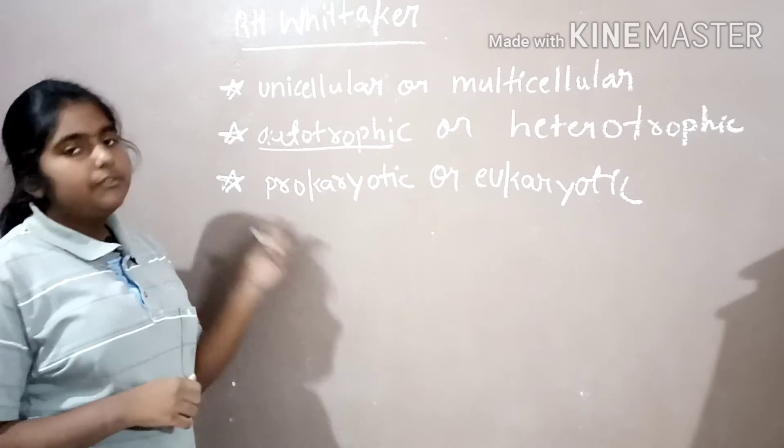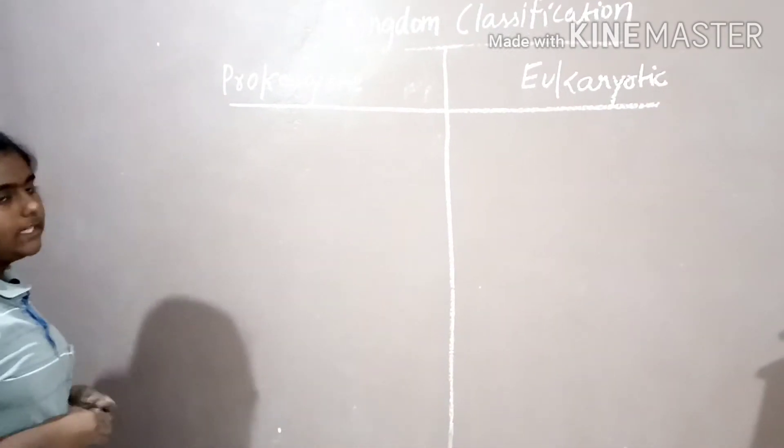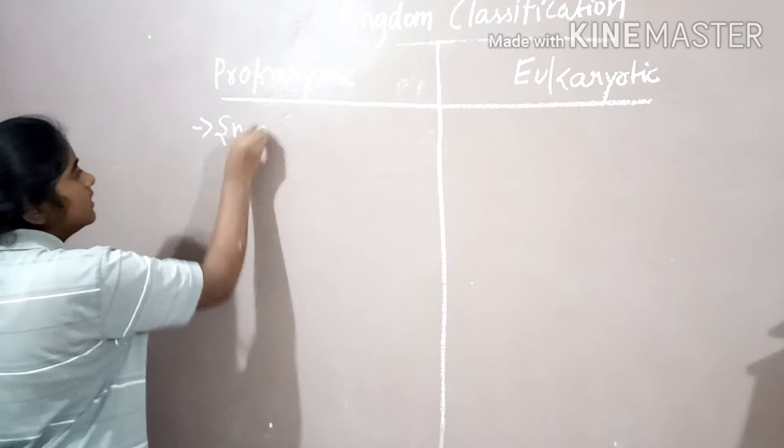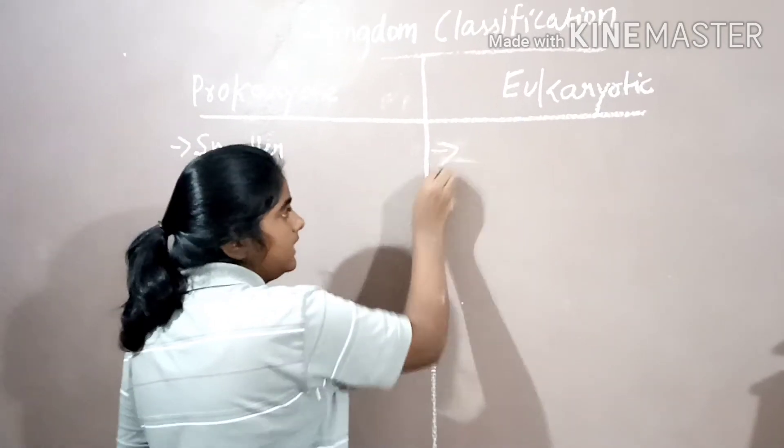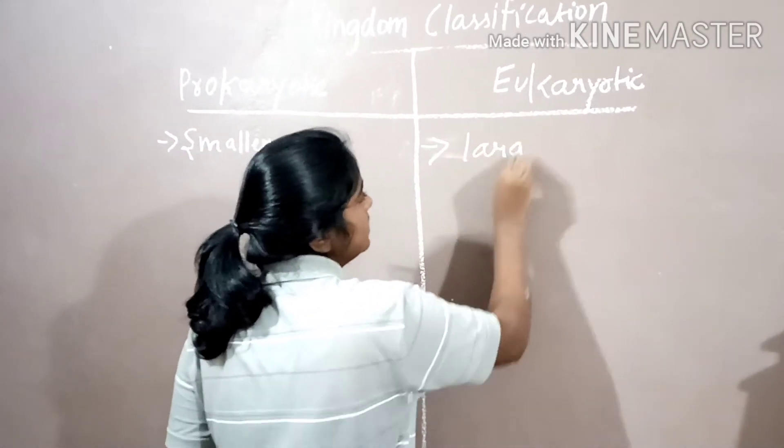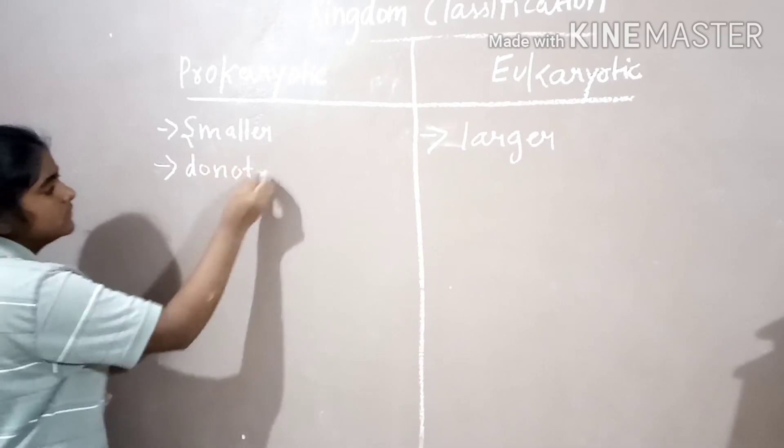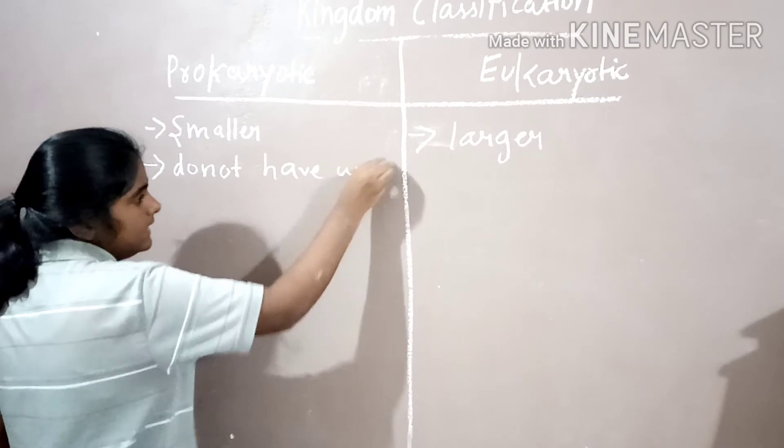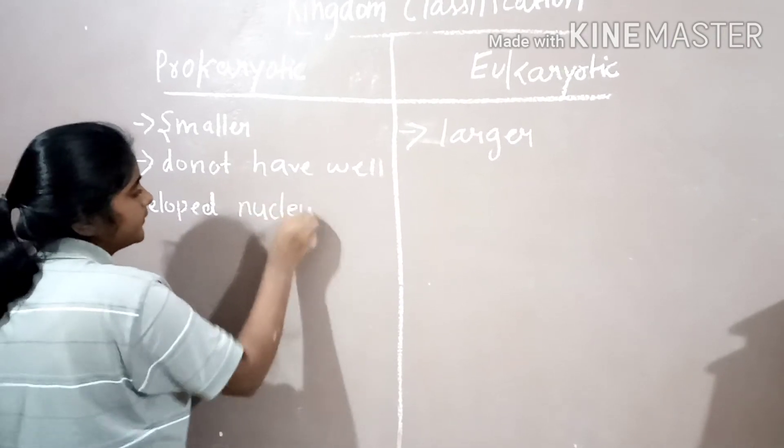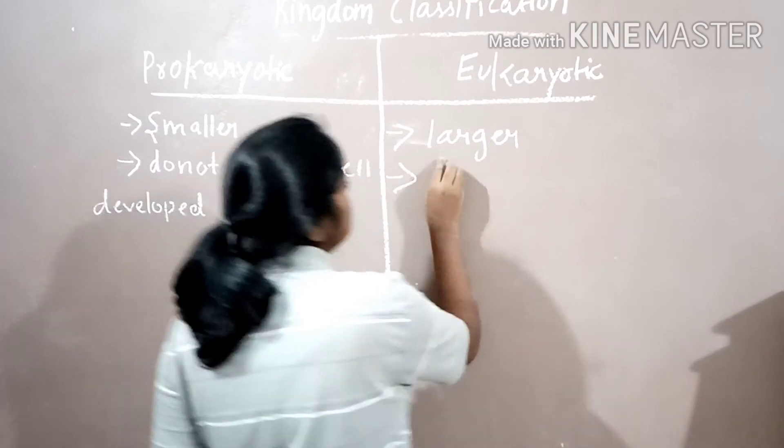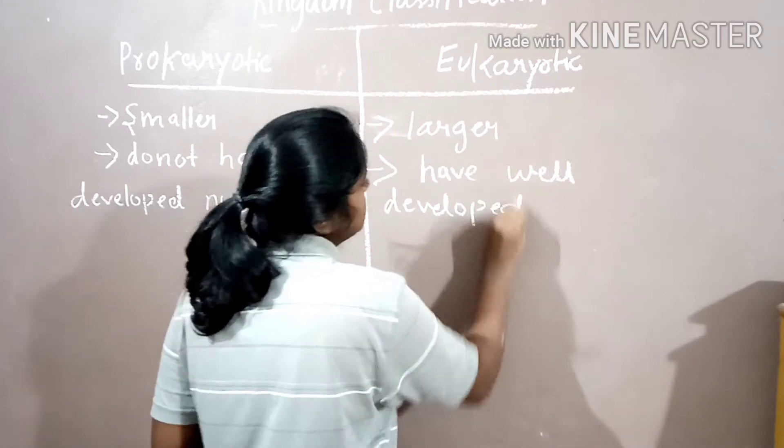Now let's study about the difference between prokaryotic and eukaryotic. Prokaryotic are smaller in size, eukaryotic are larger in size. Prokaryotic cells do not have well-developed nucleus. Eukaryotic cells have well-developed nucleus.